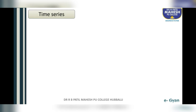Today we are going to discuss the other two components of time series. The third one is cyclical variation, also called the business cycle. Most economic and business time series are influenced by the wave-like changes of prosperity and depression, with periodic up and down movements. This movement is known as cyclical variation or oscillatory variation.